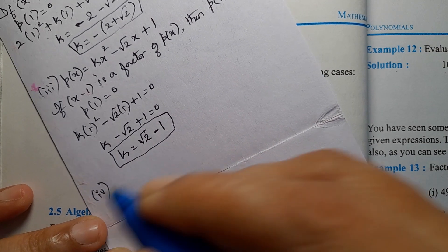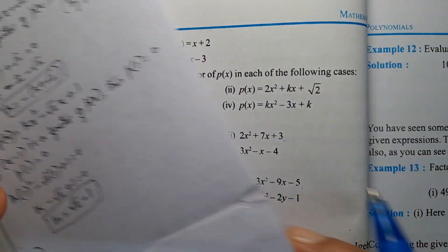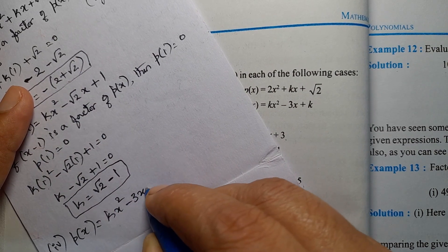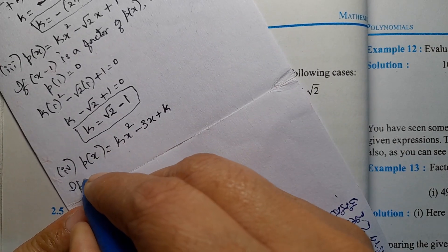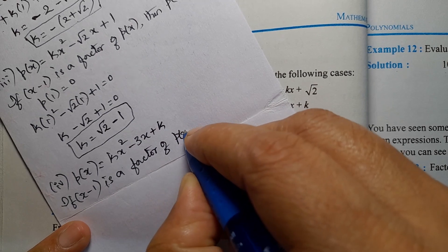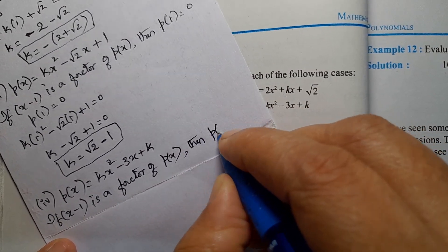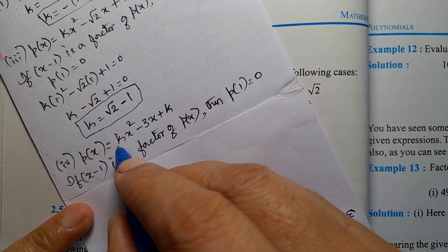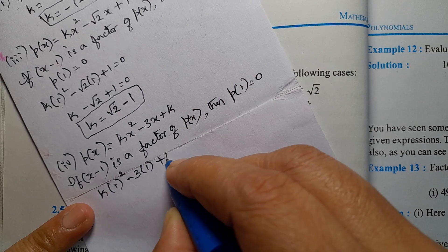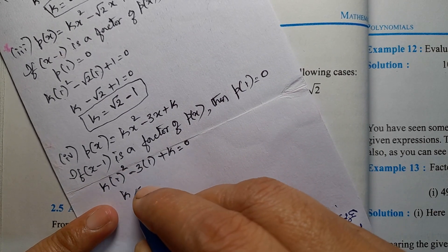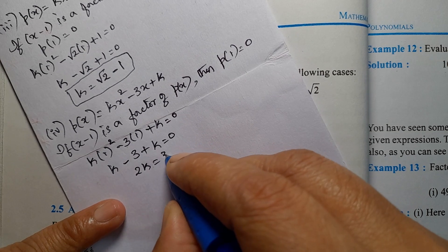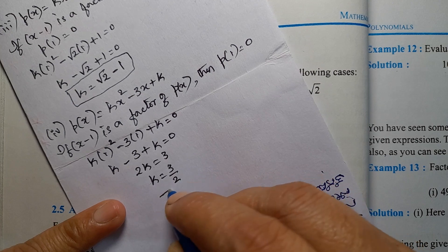Fourth case: p(x) = kx² - 3x + k. If x minus 1 is a factor of p(x), then p(1) = 0. Putting x = 1: k(1)² - 3(1) + k = 0, so k - 3 + k = 0, that is 2k = 3, therefore k = 3/2.